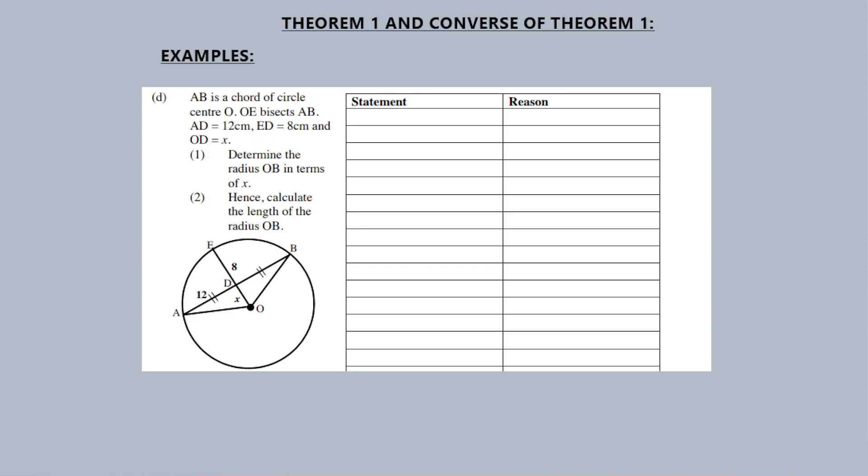Let's do another example where we apply the converse of Theorem 1. Here's another example: Line AB is a chord of a circle center O, and OE bisects AB.